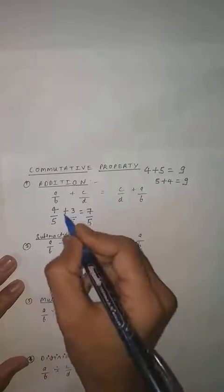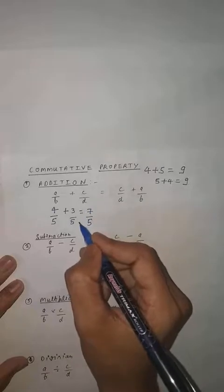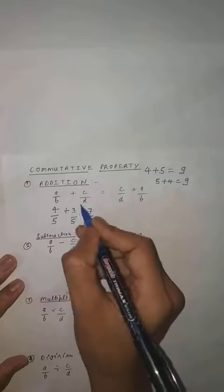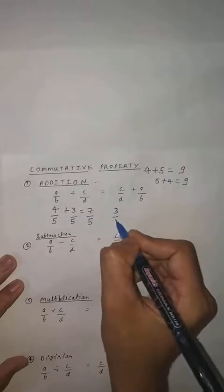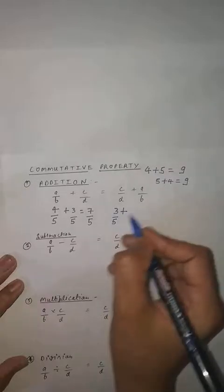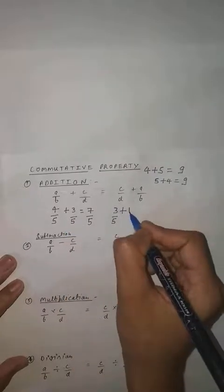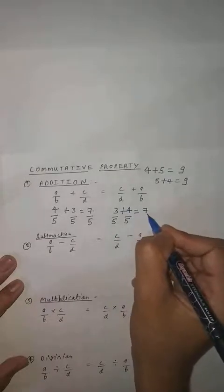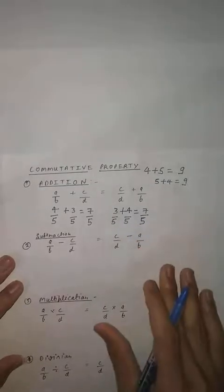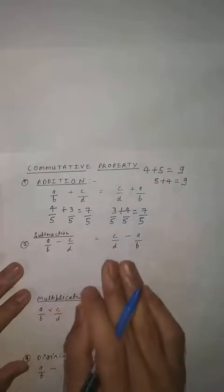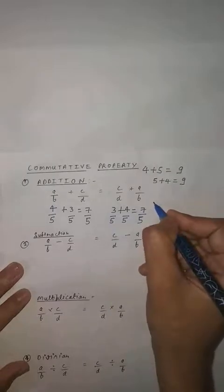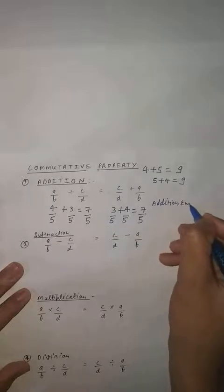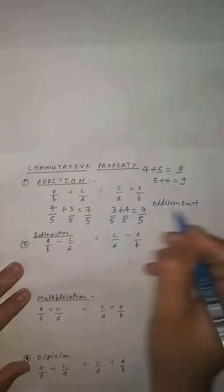Now A by B equals 4 by 5 and C by D equals 3 by 5. Now again you will write down C by D, which is 3 by 5, plus A by B, which is 4 by 5. So what is the sum? This is also 7 by 5. So what is the conclusion? The conclusion is that addition exists in commutative property, because both results are the same.